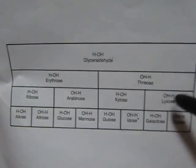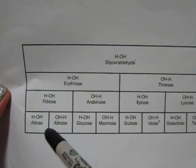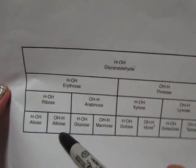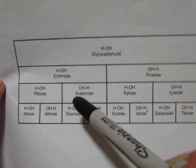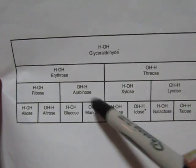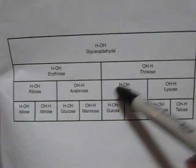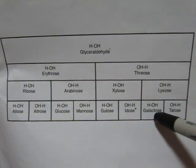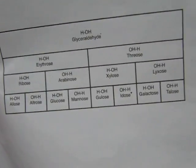Arabinose, xylose, lyxose follow the same pattern as threose — xylose is first on the left side, lyxose is on the right side. Then on the very last row: allose first, then altrose on the left side, glucose on the right side, mannose on the right side, gulose on the left side, idose on the right side, galactose on the left side, talose on the right side.